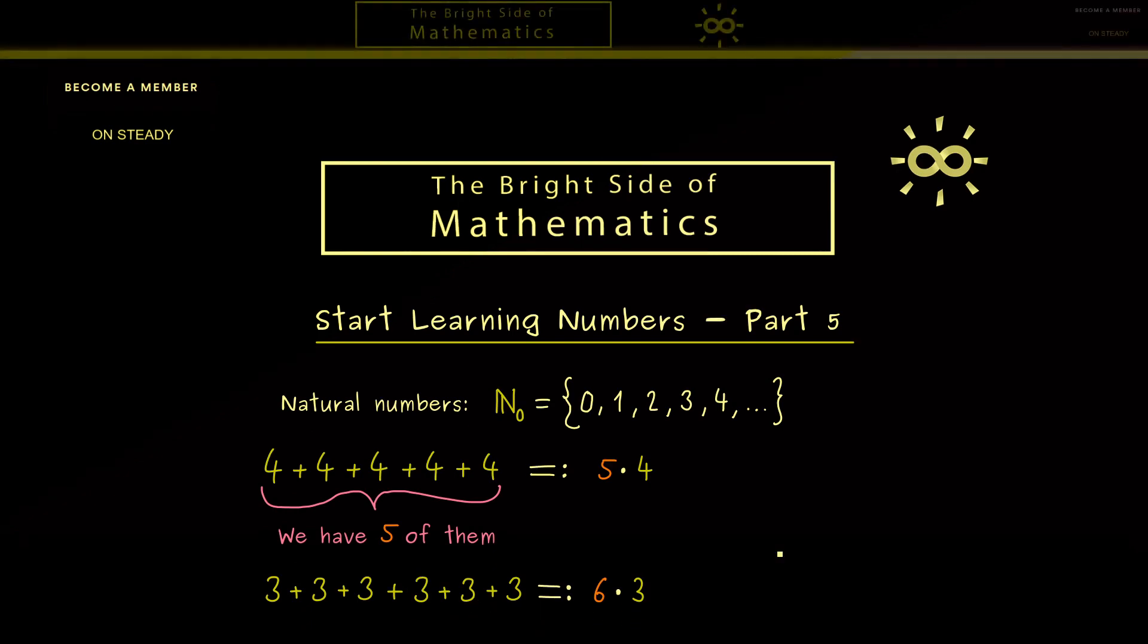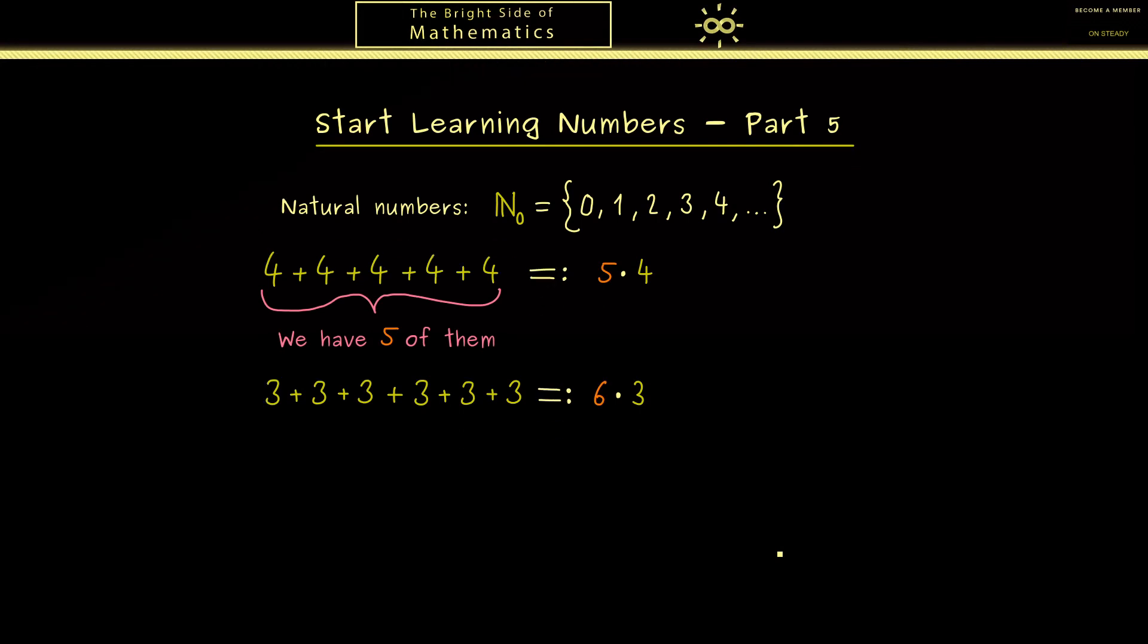Therefore this should also work when the sum is very short. If the 4 only occurs once we have 1 times 4, so with respect to our multiplication the 1 does not do anything. However if the 4 now occurs 0 times the sum has just the value 0, which means the only meaningful definition for 0 times 4 has to be 0.